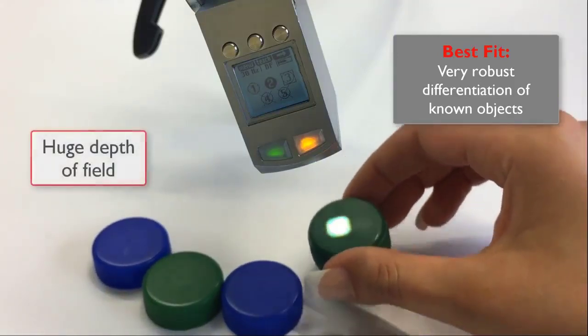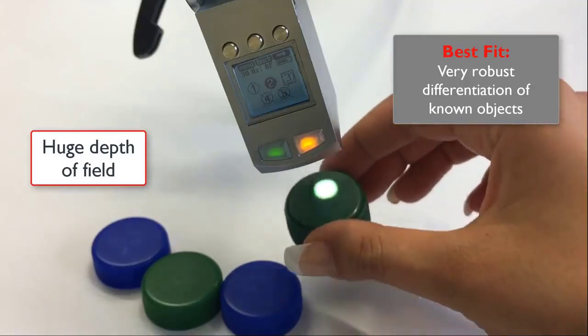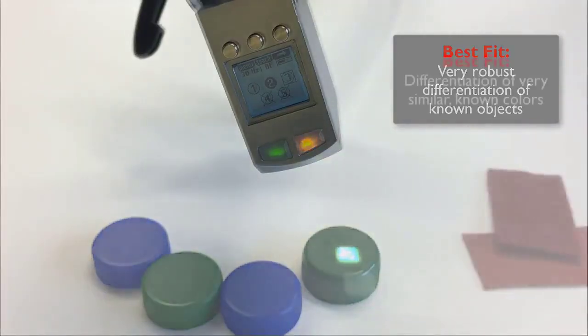And look at this depth of field. You keep moving it and it still, even at angles, detects its color too.